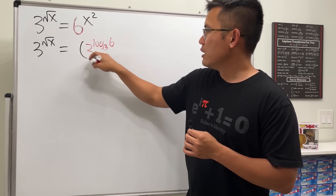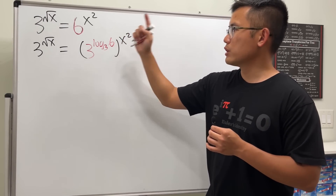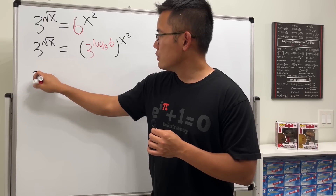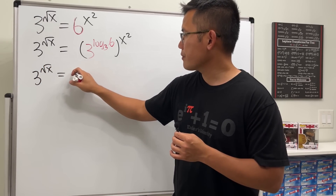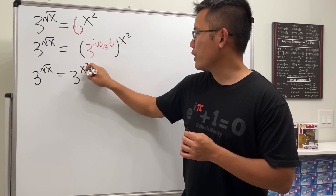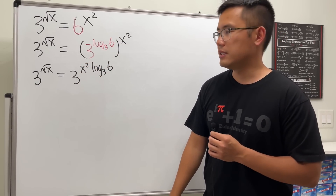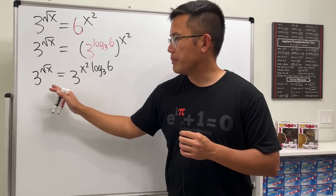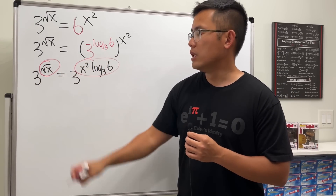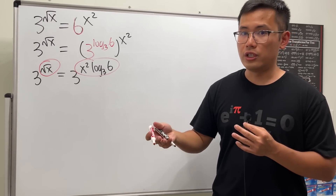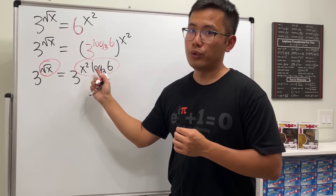Now we raise that to the x squared power. When we have a power to a power we can multiply the exponents, so we get: 3 to the square root of x equals 3 to the (x squared times log base 3 of 6). Since the bases are the same, and 3 to the x is a one-to-one function, the exponents must be equal.